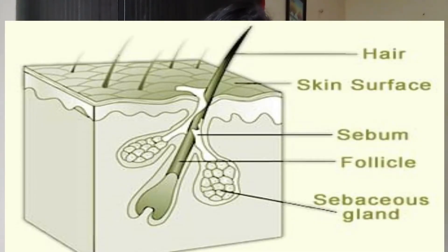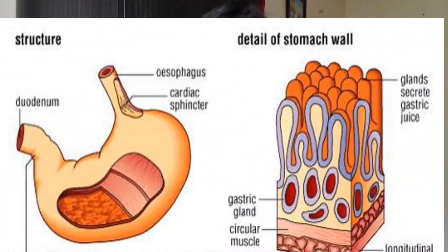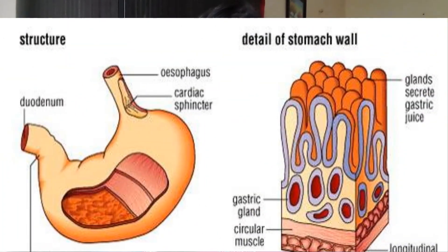Germs which get into wounds and your bloodstream are eaten by white blood cells called phagocytes. The lining of your stomach produces acids needed for digestion. These acids also kill germs which enter your body in food and drink.